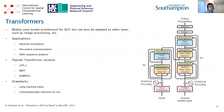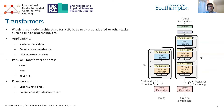First we need to talk about transformers. Transformers are a widely used model architecture for natural language processing or NLP, but they can also be adapted for other tasks such as image processing, document summarization, and DNA sequence analysis. Popular transformer variants include GPT-2, a large transformer-based model from OpenAI for predictive text; BERT, a transformer-based machine learning technique for various NLP tasks from Google; and Roberta, which is improvements made on BERT from Facebook. Most of these transformer architectures share drawbacks: long training times and computationally intensive nature, making them problematic to run on embedded devices with limited resources.